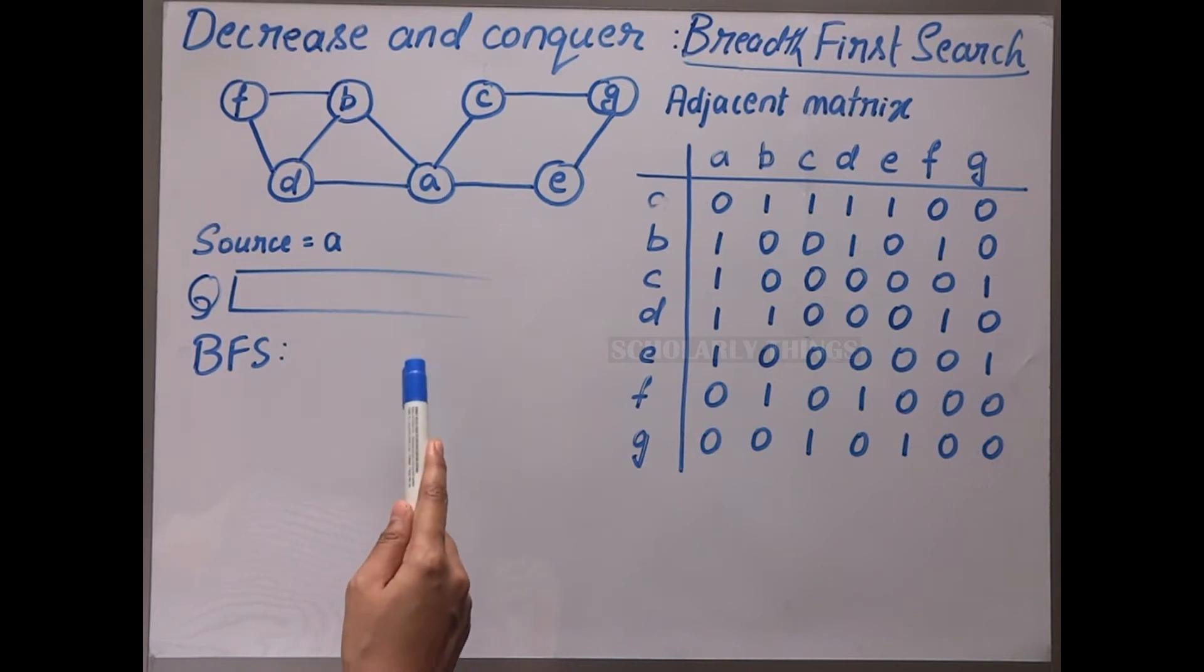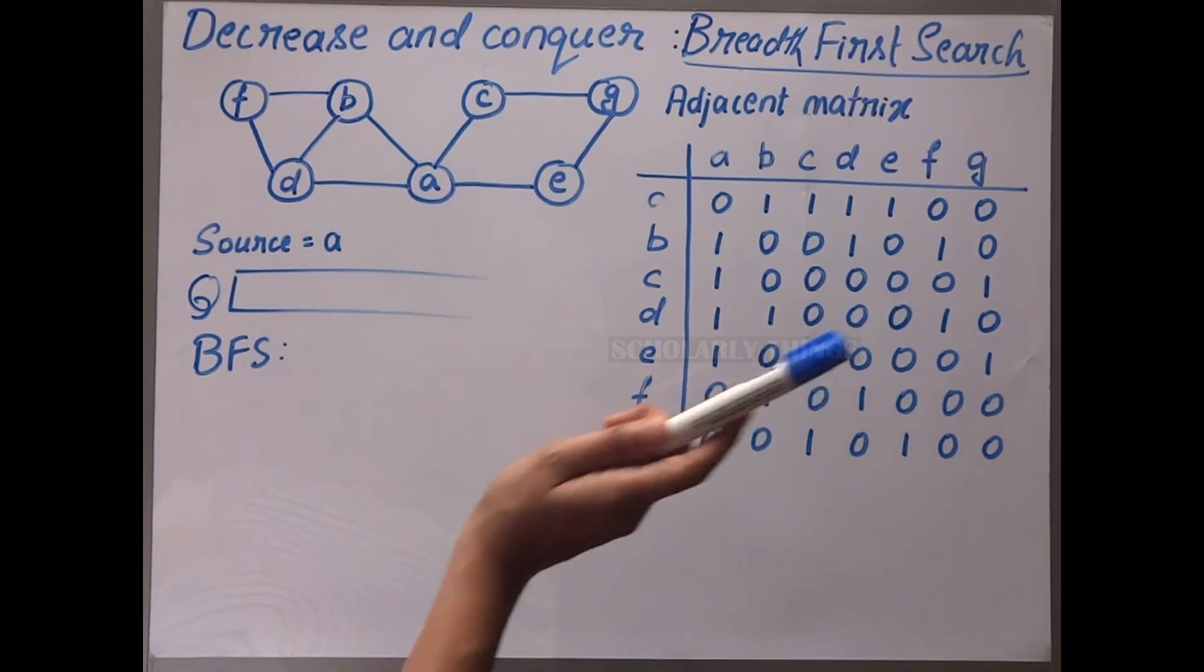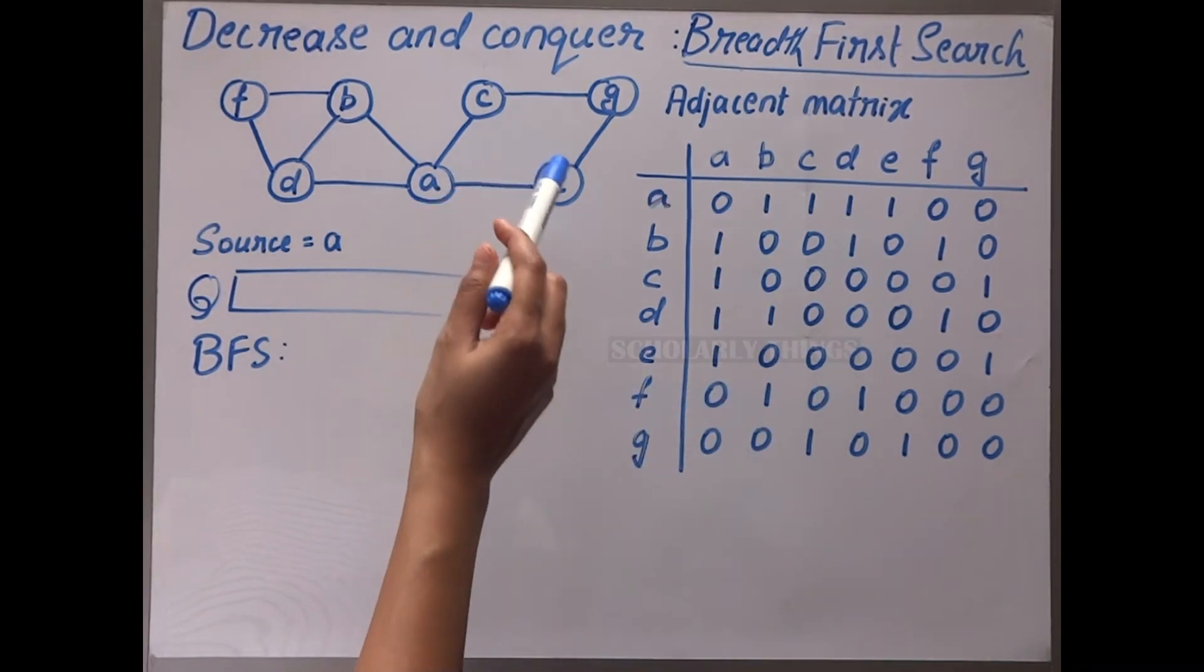Here we are traversing the graph horizontally first, and hence the name breadth-first search. This is the graph and adjacency matrix.